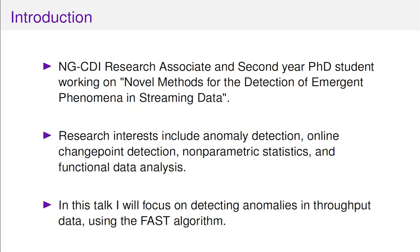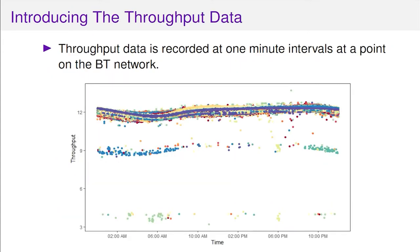Before I go into the full talk, I'm going to introduce the throughput data itself so you've all got an idea of the sort of plane I'm talking on. It's recorded at one-minute intervals at one point on the BT network, and if you were to display it over the course of the year as individual points each minute, you'd see it's just a colourful mess.